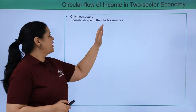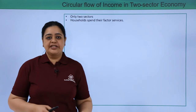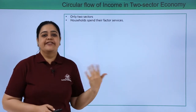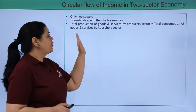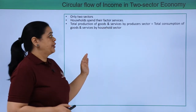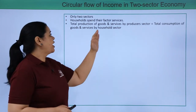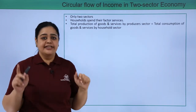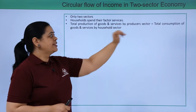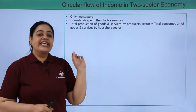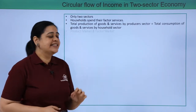What the household would do is they would provide their factor services to the business firm, who in turn will give them income. In this scenario, whatever the business firms are going to produce, that would be consumed completely by the household sector. The total production of goods and services by the producer sector would be equal to the total consumption of goods and services by the household sector.